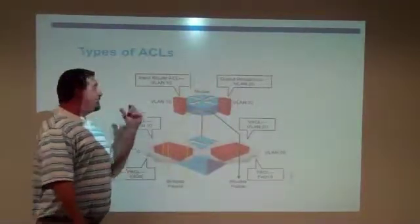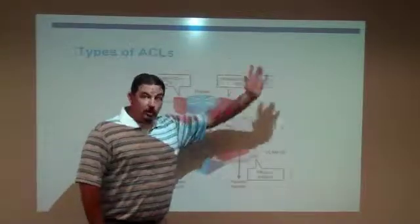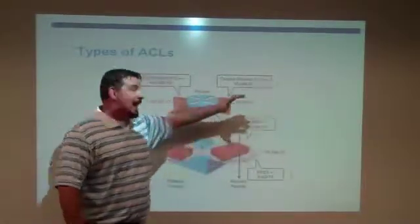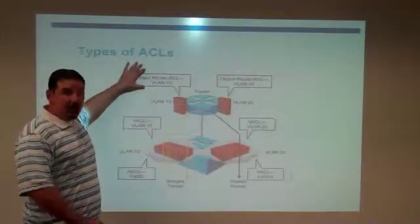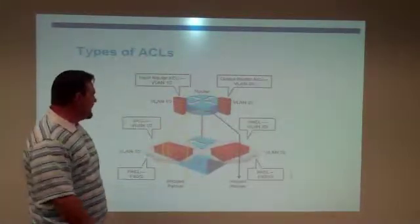Now, routed access lists are as traffic goes from one subnet to another subnet. So we're going to apply routed access lists on a multi-layer switch, typically to our VLAN interfaces, our layer 3 connection for our VLAN.